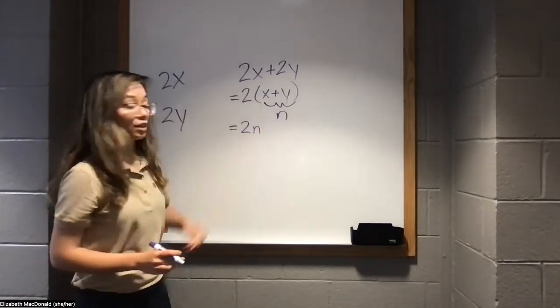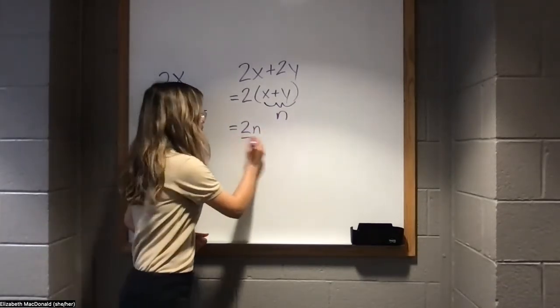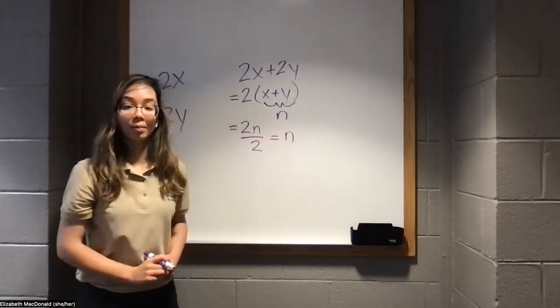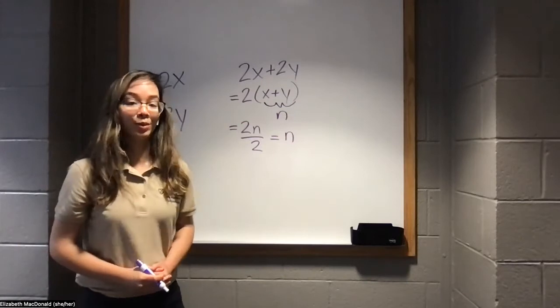We can show that this quantity 2n is even, because we can divide it by 2 and have just n left over with no remainder. It divides out very smoothly.